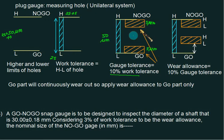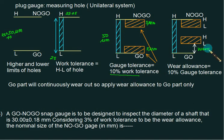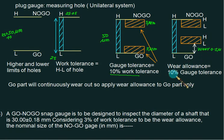If wear allowance is given in the problem, it is provided for the GO side only. Wear allowance is again taken as 10% of gauge tolerance, giving a very small value — coming out to be 0.5 micron. From the basic size you can calculate the higher and lower limits of GO, and from the higher hole limit you can calculate the higher and lower limits of NO GO. We will get this idea clear once we do the numerical.